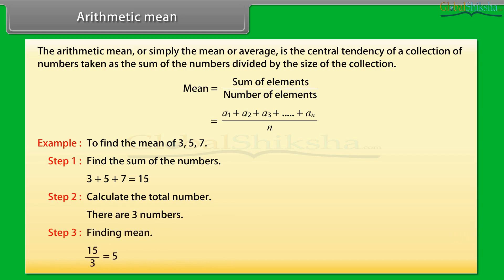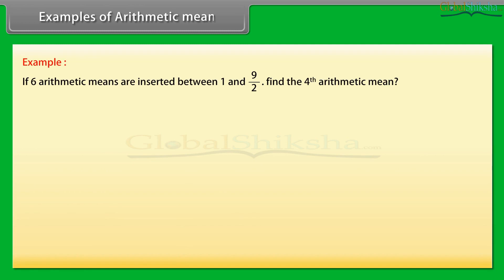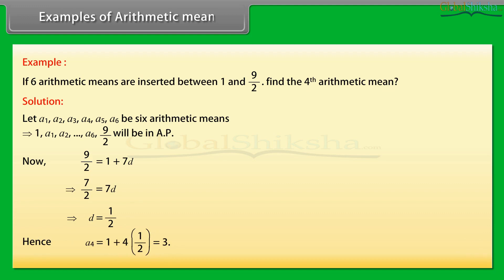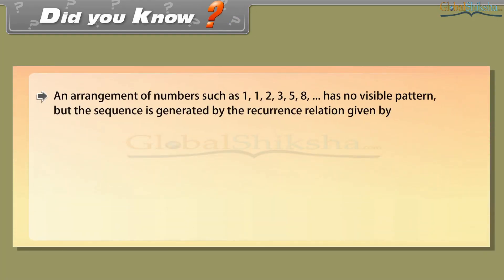Step 3: Finding the mean — 15 / 3 = 5. Example of arithmetic mean: If 6 arithmetic means are inserted between 1 and 9/2, find the fourth arithmetic mean. Solution: Let A1, A2, A3, A4, A5, A6 be 6 arithmetic means. Then 1, A1, A2, ..., A6, 9/2 will be in arithmetic progression. Now 9/2 = 1 + 7D, which implies 7/2 = 7D, so D = 1/2. Hence A4 = 1 + 4(1/2) = 3.